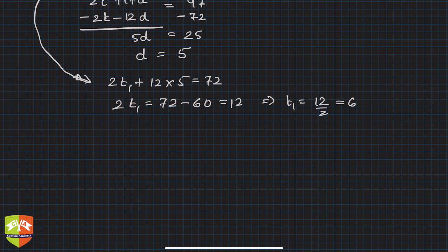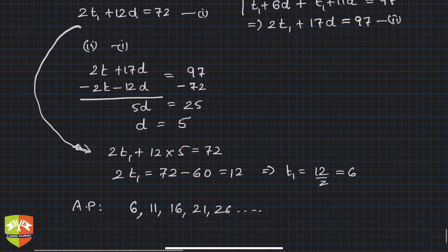So hence, what will be the AP? The given AP is nothing but 6 as the first term, then first term plus d, that is 6 plus 5, which is 11, then 11 plus 5 is 16, then 21, then 26, and so on and so forth. This is the given AP. This is what they have asked us to find out.